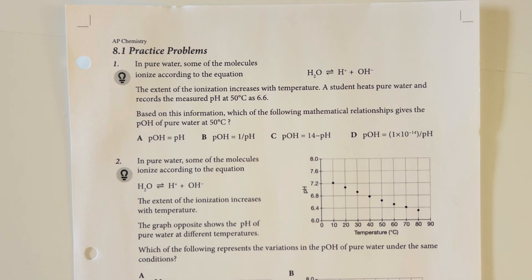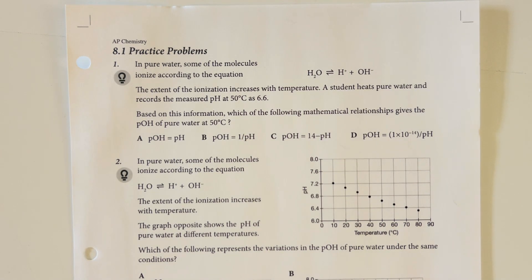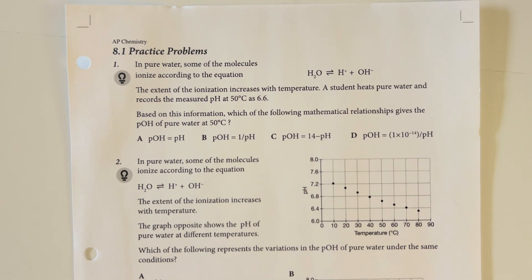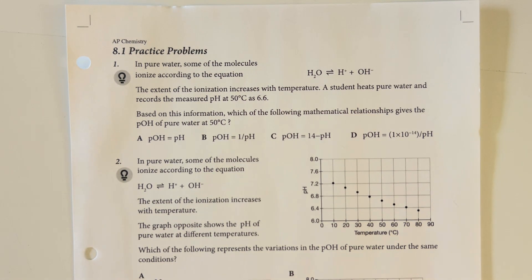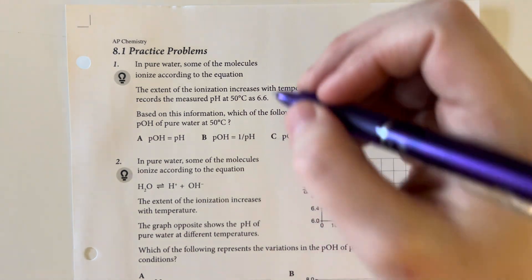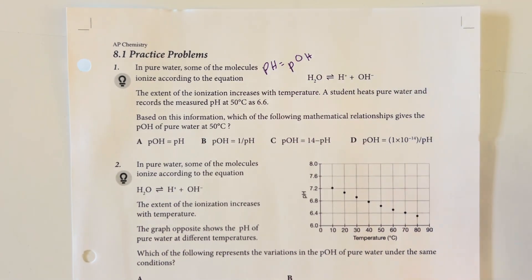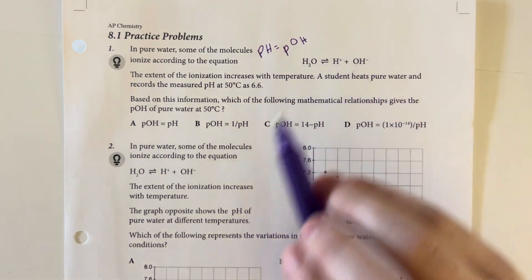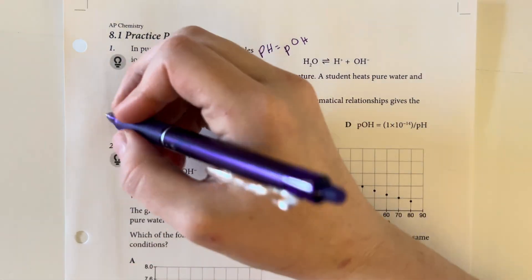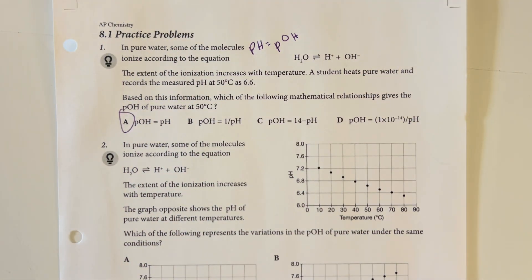The extent of ionization increases with temperature. A student heats pure water and records a measured pH at 50 degrees Celsius as 6.6. Based on this information, which of the following mathematical relationships gives the pOH of pure water at 50 degrees Celsius? So pH is equal to pOH because we have the same relationship here, and so A is going to be my answer choice.